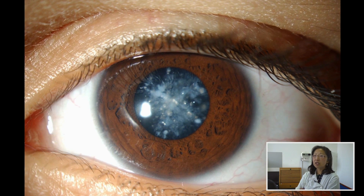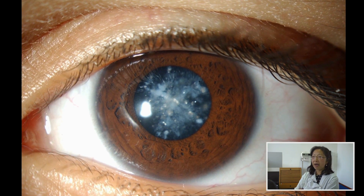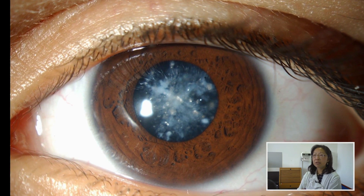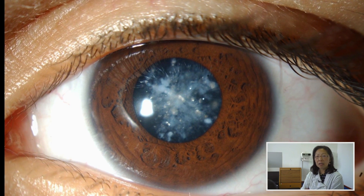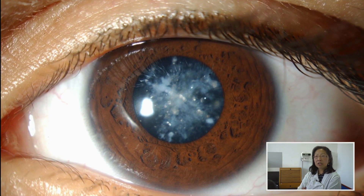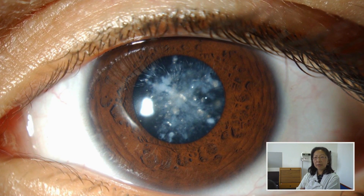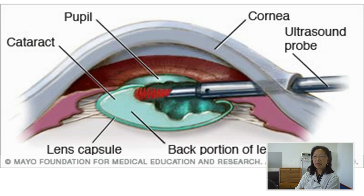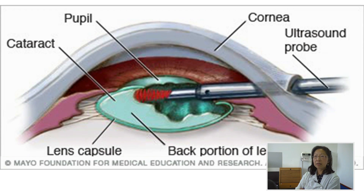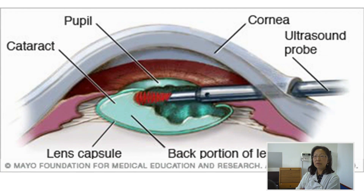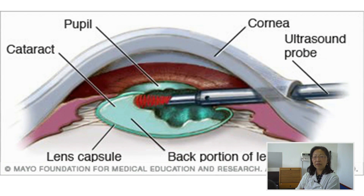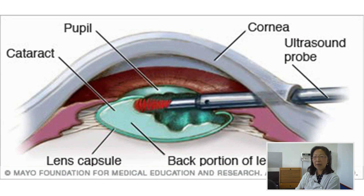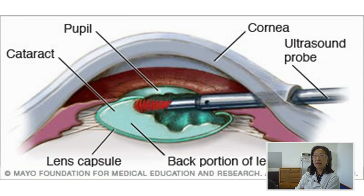Cataract is an opacified or cloudy lens that happens with ageing or associated to systemic disease. Cataract surgery consists in removal of the interior of the cloudy lens, keeping the capsule bag intact.